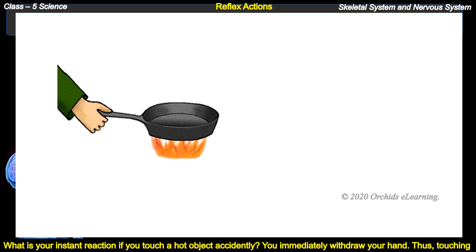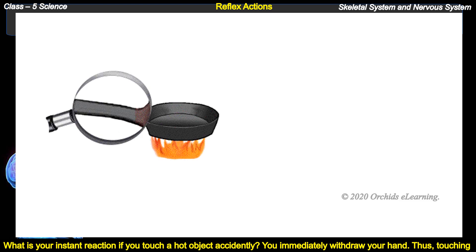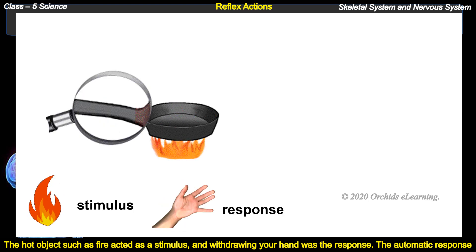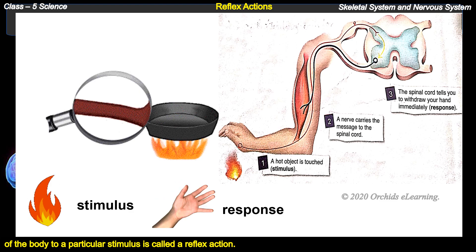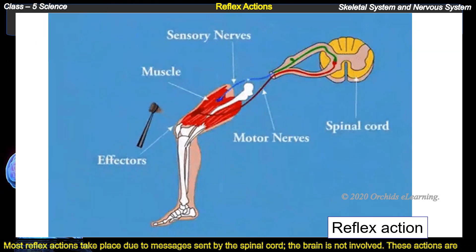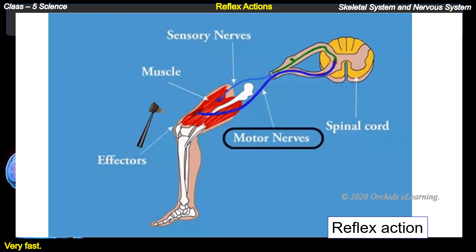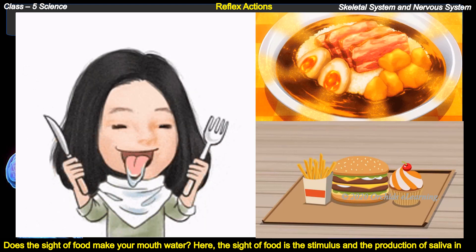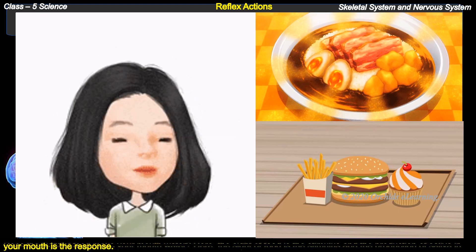Reflex actions: what is your instant reaction if you touch a hot object accidentally? You immediately withdraw your hand. Touching the hot object acted as a stimulus, and withdrawing your hand was the response. The automatic response of the body to a particular stimulus is called a reflex action. Most reflex actions take place due to messages sent by the spinal cord — the brain is not involved. These actions are very fast. For example, the sight of food making your mouth water: the sight of food is the stimulus, and the production of saliva is the response.